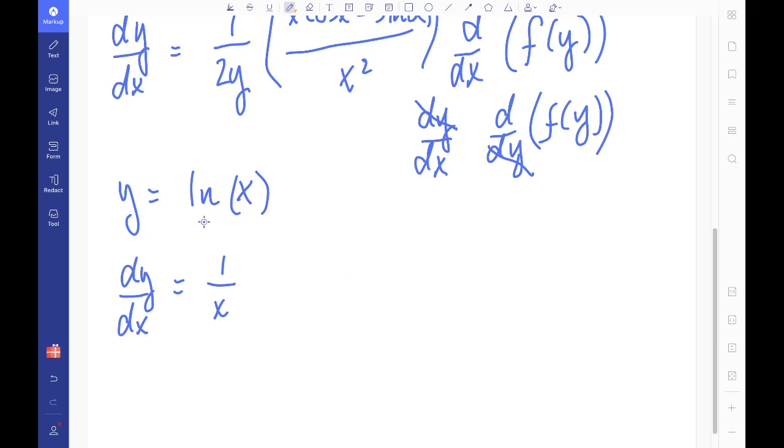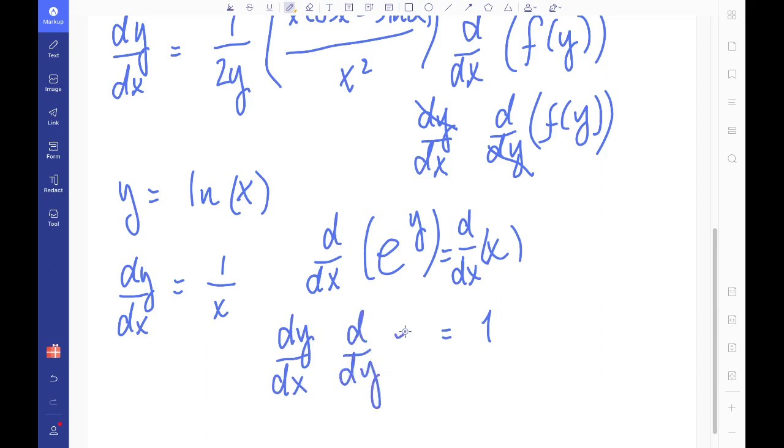If we reverse this natural logarithm of x, we can put everything to the power of e. So we can say e to the power of y is now equal to x. If we differentiate on both sides, we do d dx on this side and d dx on this side. Then on the right hand side, we'll just get one. But on the left hand side, we have to implicitly differentiate. So we can say that this is equivalent to dy dx multiplied by the differential with respect to y of e to the y.